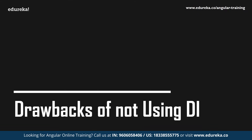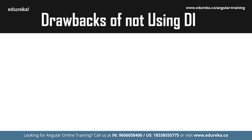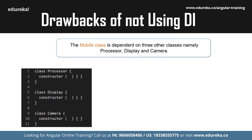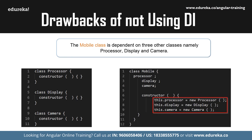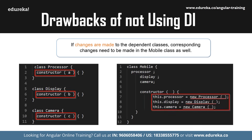Now let's see what are the drawbacks of not using DI. Let's say we have a mobile class that depends on other classes — the processor class, the display class, and the camera class. All three classes are being initialized within the constructor of the mobile class itself. So if you make changes to any of those classes, you will have to make the corresponding changes within the constructor of the mobile class as well. This clearly shows that the code is not flexible.